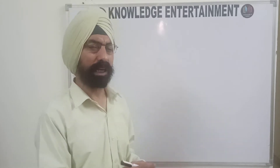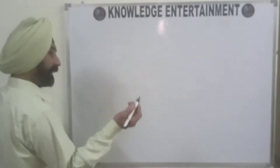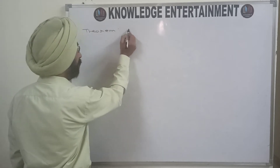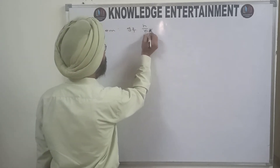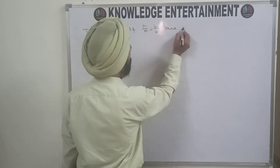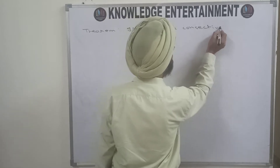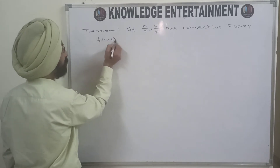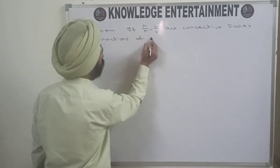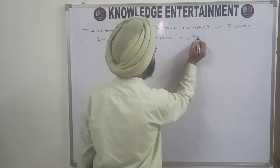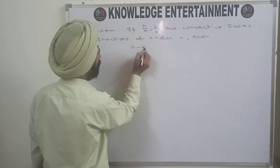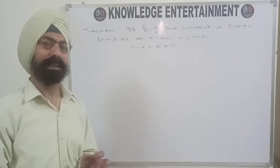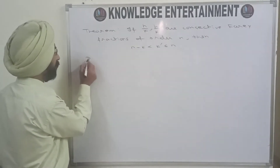I'm going to start with a very easy theorem. The result says: if h/k and h'/k' are consecutive Farey fractions of order n, then n minus k is less than k', which is less than or equal to n. This is a very easy theorem — the result is very useful but the proof is very easy.